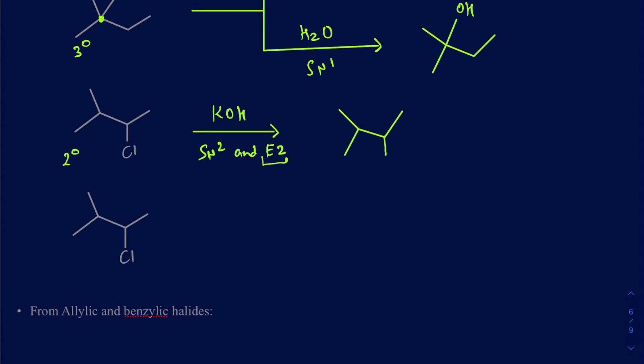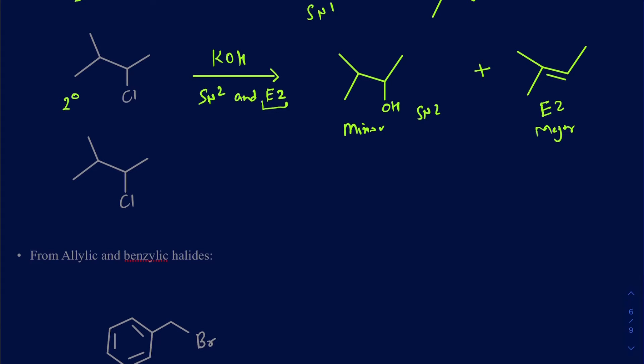I may get a little bit of SN2 as the minor product, and the majority would be E2, giving an alkene — that's the major product. When I say major and minor, it's not going to be 90%/10%; it's going to be somewhere around 60% major and 40% minor, or maybe 70% major and 30% minor. There's not a big difference in those ratios. So to avoid any E2 and get only SN2, I would have to use a weak nucleophile and weak base, which is water.